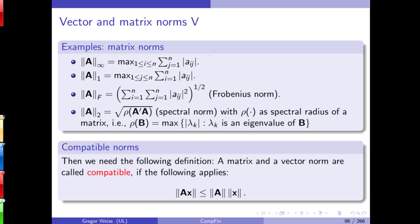We generalize the idea of the norm of a real number, and you might also know the Euclidean norm for a vector in R2, the real plane. Here you see a further generalization of this idea of a norm for matrices, with a couple of examples: the L-infinity, the L1, the Frobenius, and the spectral norm. These allow you to measure the mathematical distance from matrix A to the zero matrix.